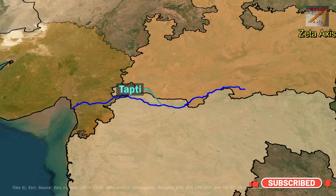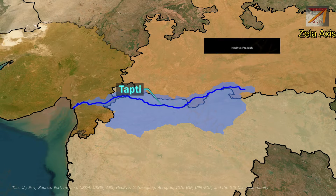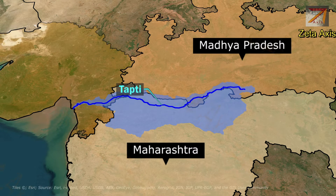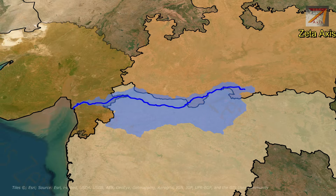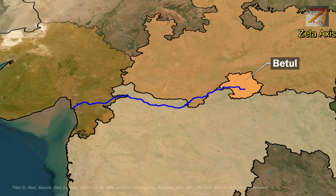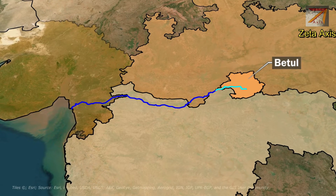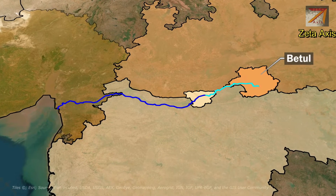The Taapti River basin is 65,415 square km, covering Madhya Pradesh, Maharashtra, and Gujarat. Now let's discuss the course of Taapti River. Taapti River originates from Betul district in Madhya Pradesh. From Betul district, it flows along the boundary of Madhya Pradesh and Maharashtra and then re-enters Madhya Pradesh in Burhanpur.